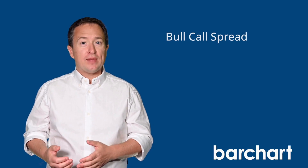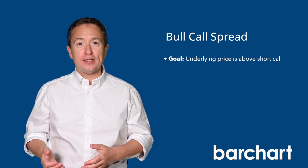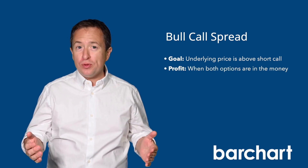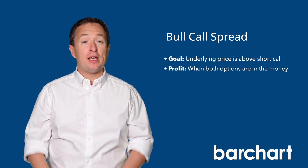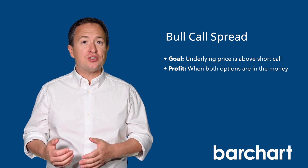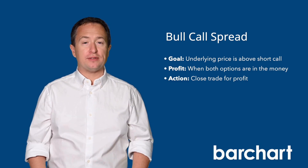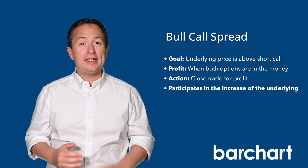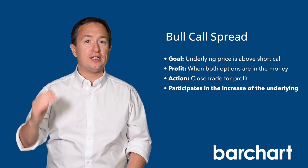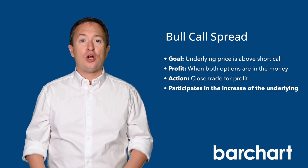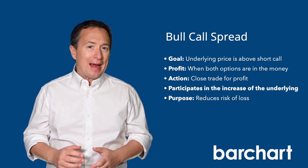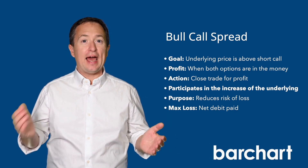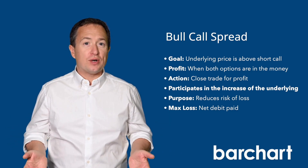The goal of the trade is for the underlying stock price to be above the short call at expiration, leading to both options expiring in the money. If that happens, investors can close out the trade at a profit. Bull call spreads allow traders to participate in an upside price movement of the underlying asset while limiting the cost of entry. The maximum loss is limited to the difference between the premium paid and received, otherwise known as the net debit.